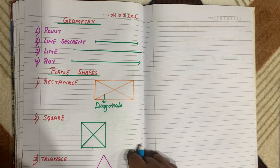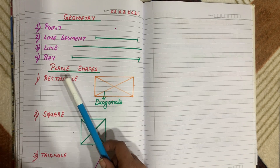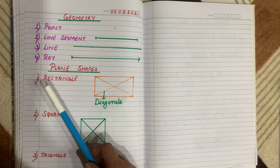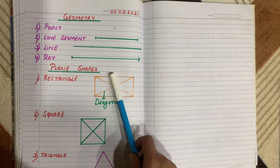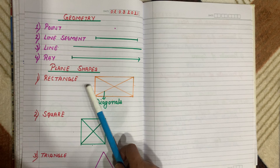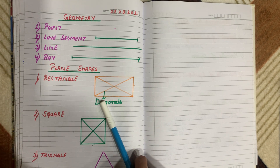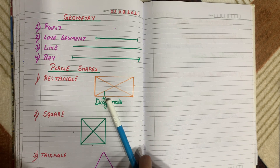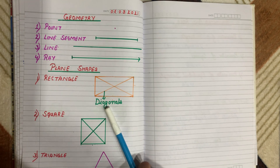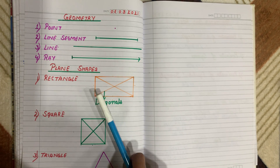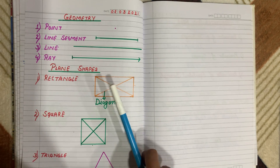After that we learned about plane shapes. A rectangle has four sides and opposite sides of a rectangle are equal. A diagonal is a line which joins the opposite vertices of a plane figure.